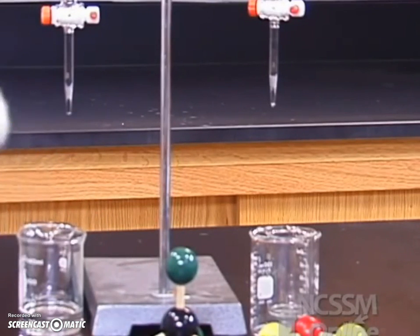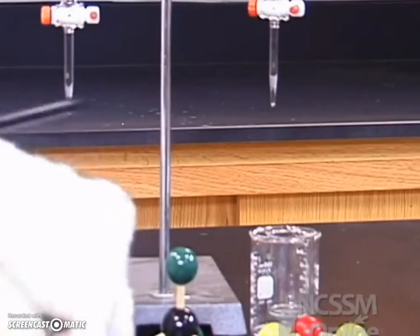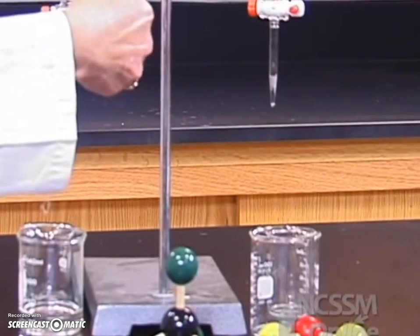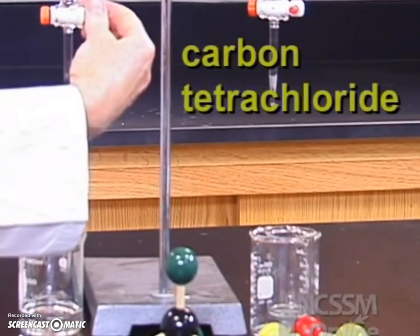There's the rod. She's going to rub it with rabbit fur, which allows it to have a negative charge. She's going to place that negatively charged rod beside the stream of carbon tetrachloride, which is tetrahedral.